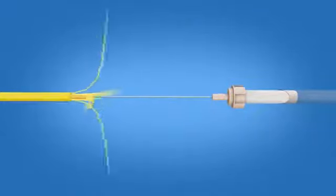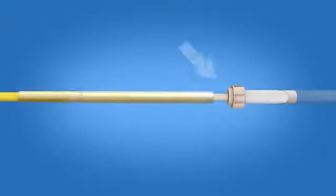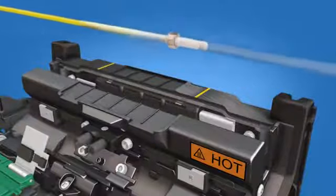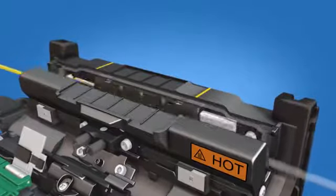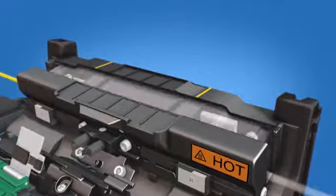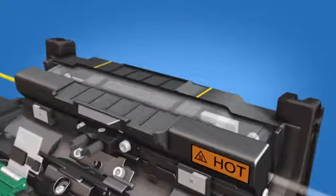Slide the protective sleeve over the splice so that it is flush with the ferrule unit. Position the sleeve in the center of the heater while continuing to maintain contact with the ferrule. Heat the protective sleeve. Allow the sleeve to cool before removing it from the heater.